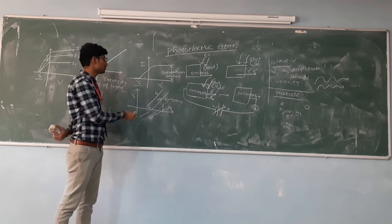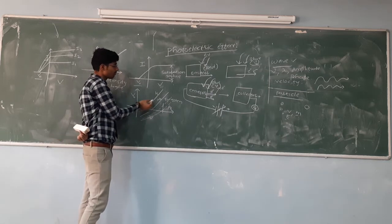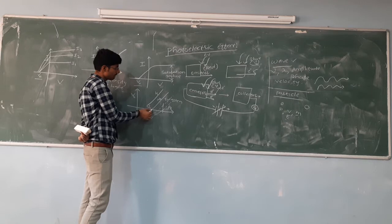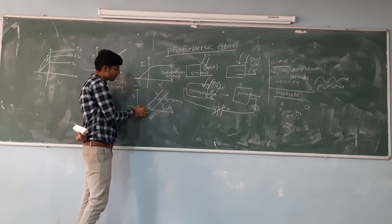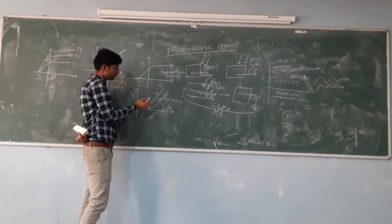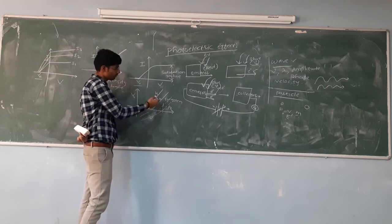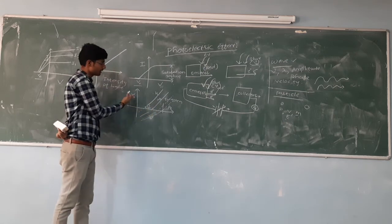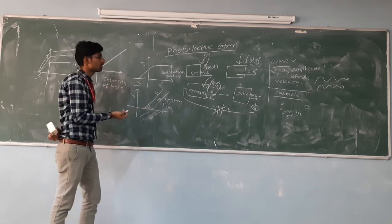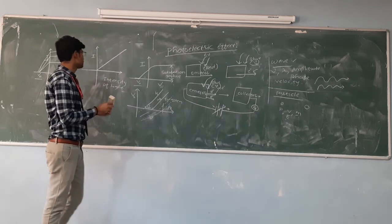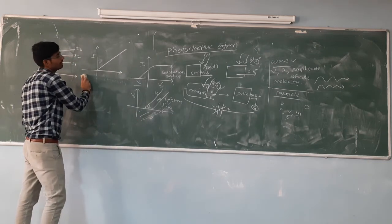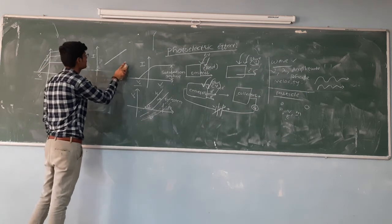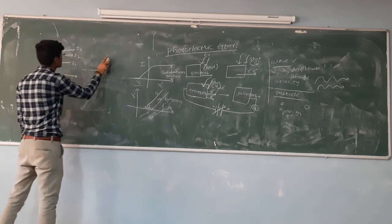The slopes of these frequency-stopping potential graphs may be nearly the same, but the threshold frequencies are different for different materials. The stopping potential and threshold frequency for potassium metal starts at a different value compared to sodium metal. So emission of electrons takes place at different potentials and different threshold values. Applying classical theory of light fails to explain the photoelectric effect.